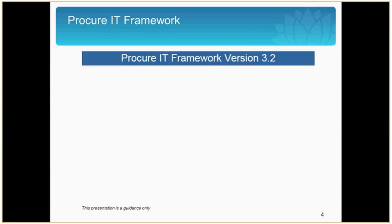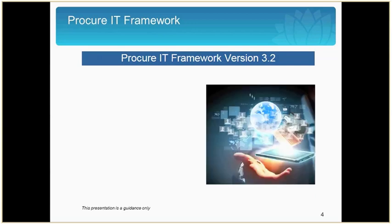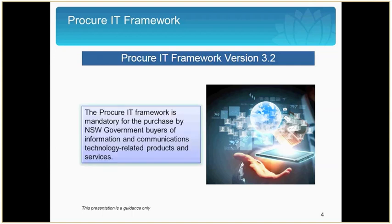ProcureIT version 3.2 is the latest version of ProcureIT framework documents and replaces ProcureIT version 3.1. It went live on the 1st of July 2017 and became mandatory from the 1st of September of that same year. From the 1st of September 2017, ProcureIT version 3.2 applies to all new ICT procurement above $150,000 over the life of the contract and all high-risk ICT procurement.